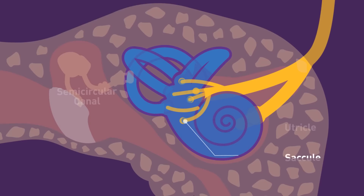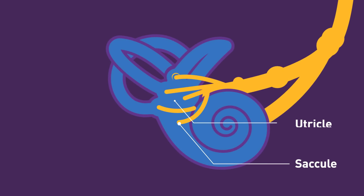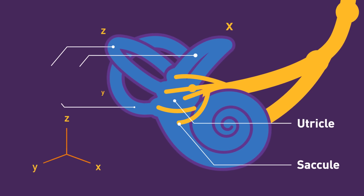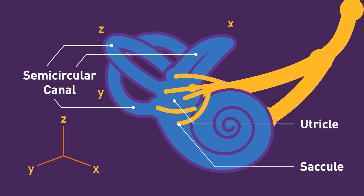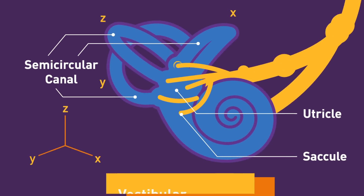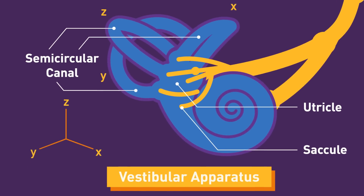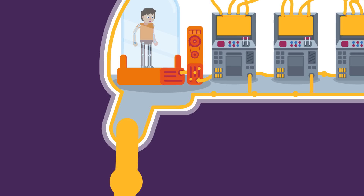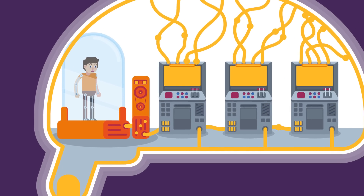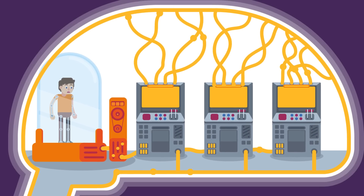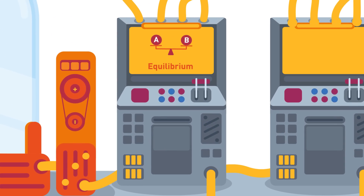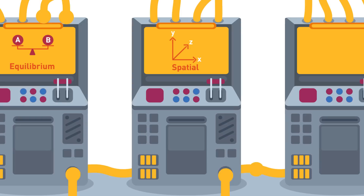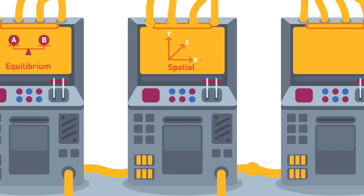Our ears contain special parts like the saccule, utricle, and three semicircular canals, which are all part of the vestibular apparatus. The purpose of the vestibular apparatus is to provide the brain the correct perception of equilibrium, balance, spatial orientation, and motion.